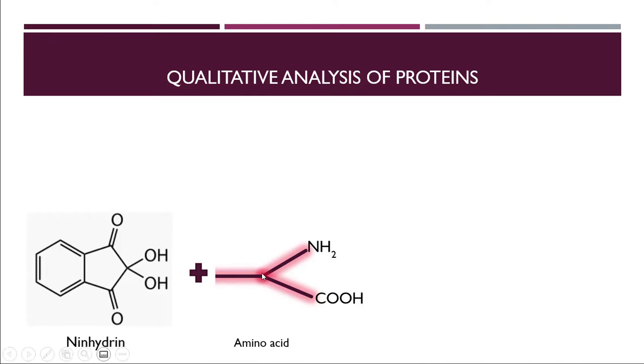These joints are basically the carbon atoms here and here. This is alanine. When amino acid combines with ninhydrin, they make a compound, and that compound is called Ruhemann's Purple. That's why the test tube contains purple color.